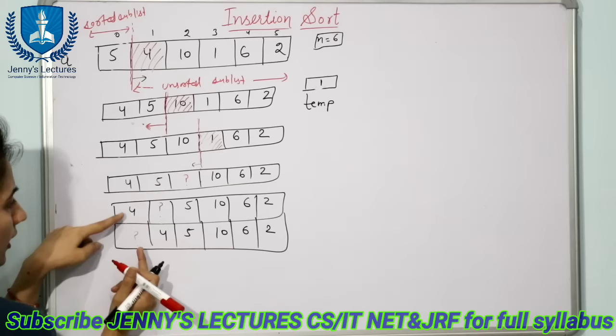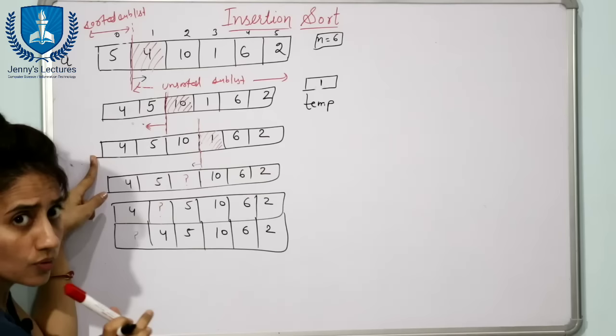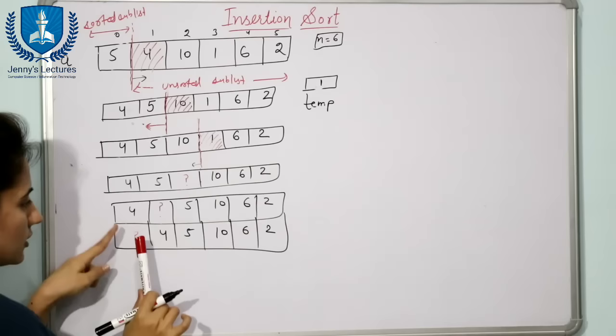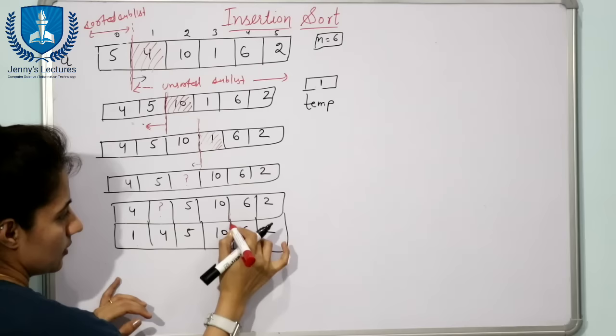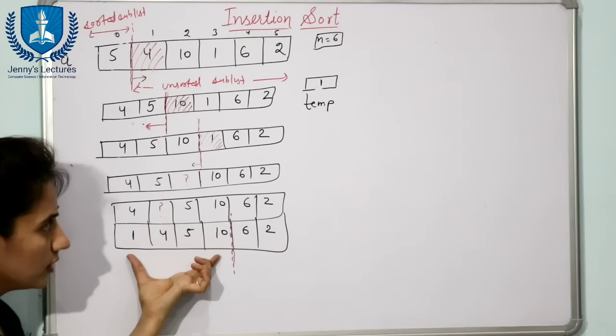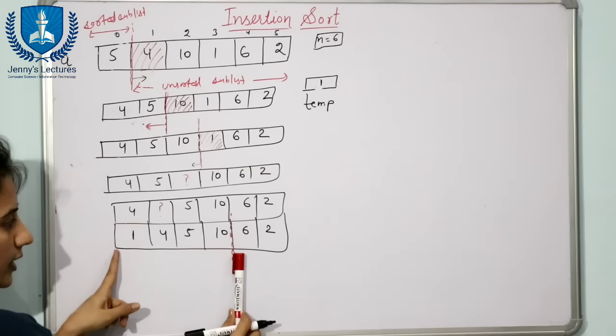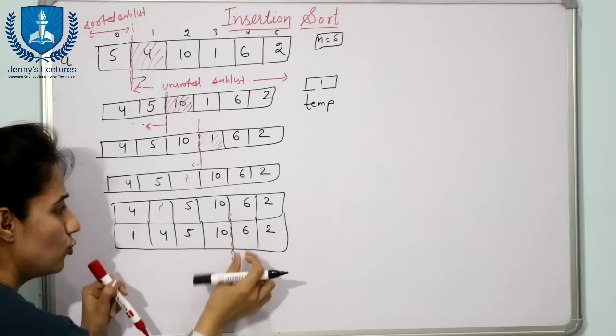Is there any other value in the sorted sublist left? No — we have reached index 0. So we insert the temp value 1 here. Now the array is [1, 4, 5, 10, 6, 2]. The sorted sublist now has 4 elements and the unsorted sublist has 2 elements.